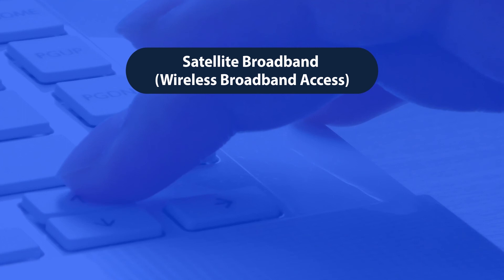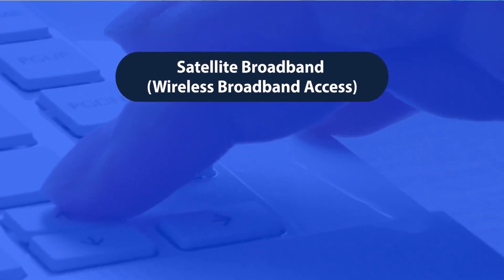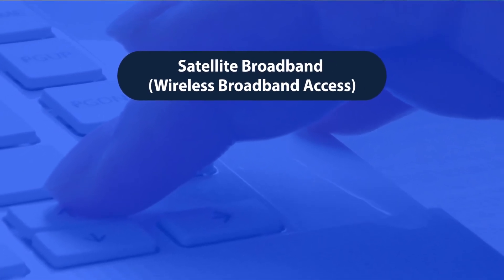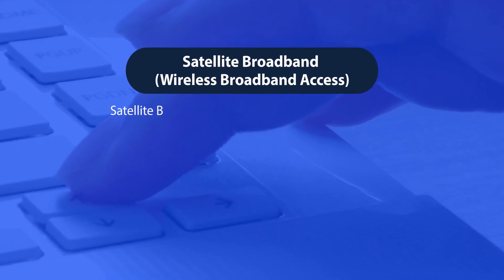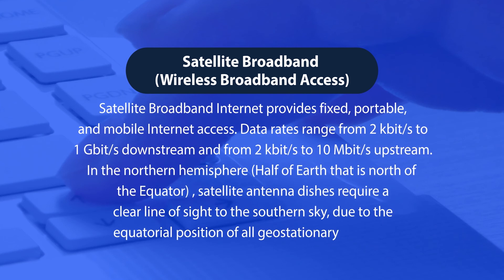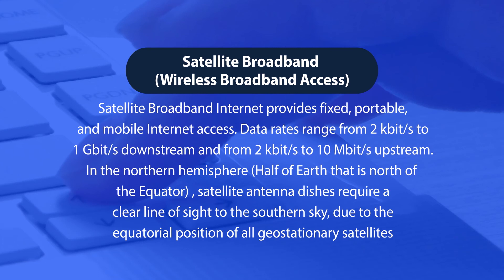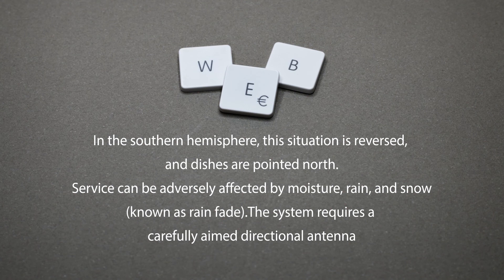Now we will see wireless broadband access. The first type is satellite broadband. Satellite broadband internet provides fixed, portable, and mobile internet access. Data rates range from 1 Gbps downstream and up to 10 Mbps upstream. In the northern hemisphere, satellite antenna dishes require a clear line of sight to the southern sky due to the equatorial position of geostationary satellites; in the southern hemisphere the situation is reversed. Service can be adversely affected by moisture, rain, and snow — known as rain fade — and the system requires a carefully aimed directional antenna.